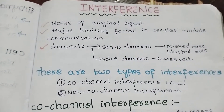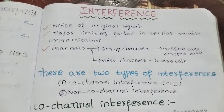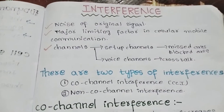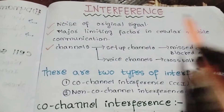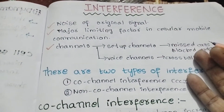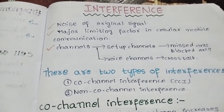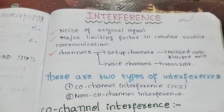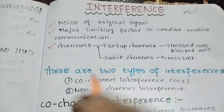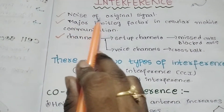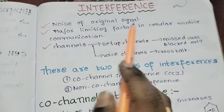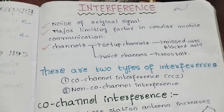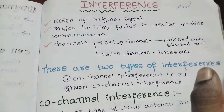In general, interference means disturbances. In signal language and cellular communications, interference means like some noise added to the original signal. Interference is the major limiting factor in cellular mobile communication. The main drawback in cellular systems is interference.